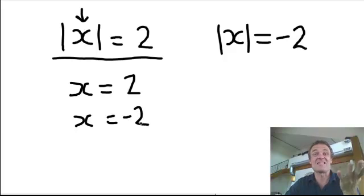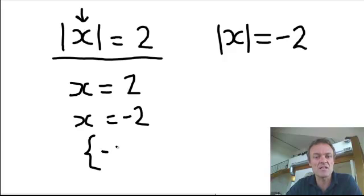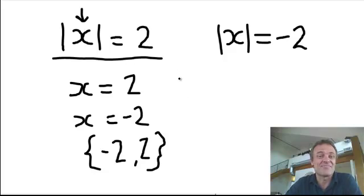And basically, that's the answer. We tend to just write it in fancy notation like this, curly parenthesis, a negative 2, and also, a positive 2, curly parenthesis. So that's that. That's how you do absolute value equations.